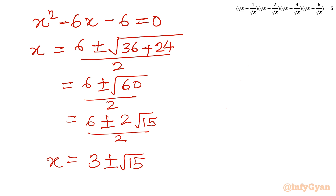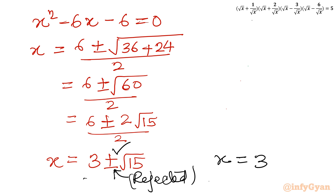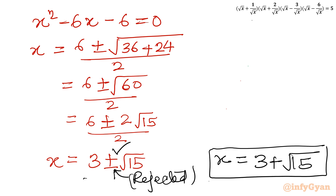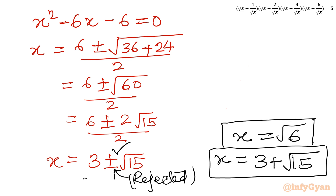Again, one solution will be accepted and another rejected. Since √15 is slightly less than 4, the value 3 - √15 is negative, which is unacceptable given our restriction that x must be positive. So 3 - √15 is rejected. The accepted solution is x = 3 + √15. Combined with the first solution x = √6, we have two real solutions for the given equation. I hope you like this video — do not forget to like, share, and subscribe. Bye-bye till next video!